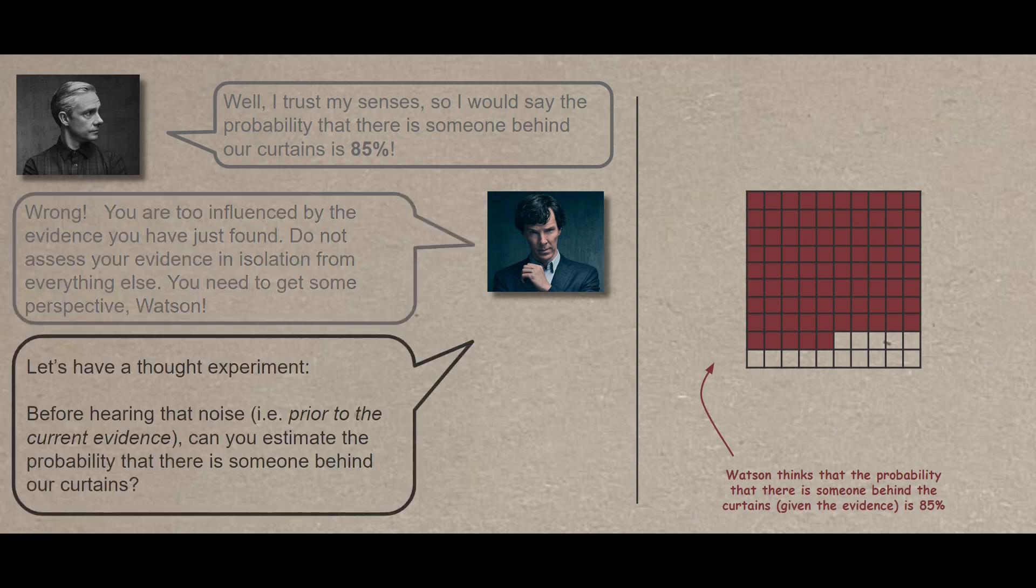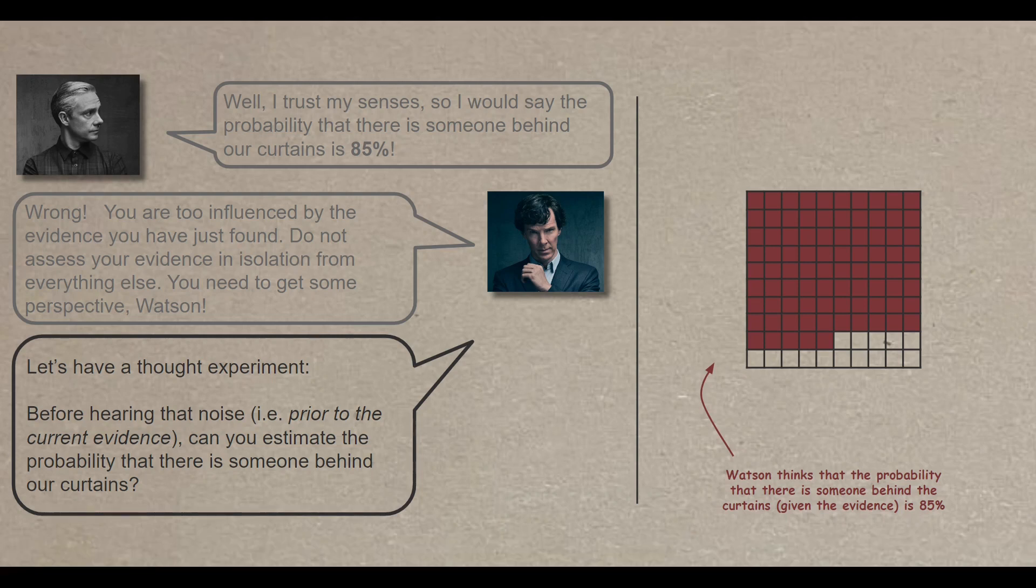Let's have a thought experiment. Before hearing the noise, like prior to the current evidence, can you estimate the probability that there is someone behind our curtains? So what Sherlock tries to say here is let's step back a bit and think about the context. How probable that there is someone hiding behind the curtains to start with regardless of any piece of evidence?